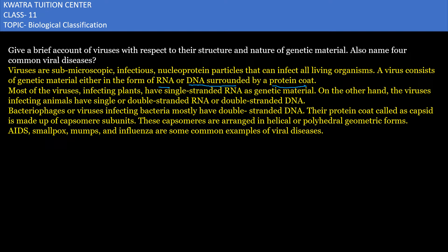The virus which affects plants has mostly single-stranded RNA as its genetic material. On the other hand, the virus which affects animals has single or double-stranded RNA or double-stranded DNA as its genetic material.